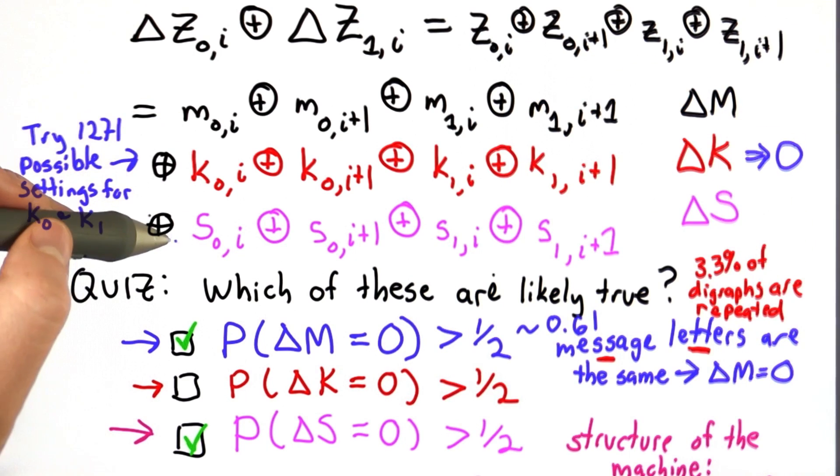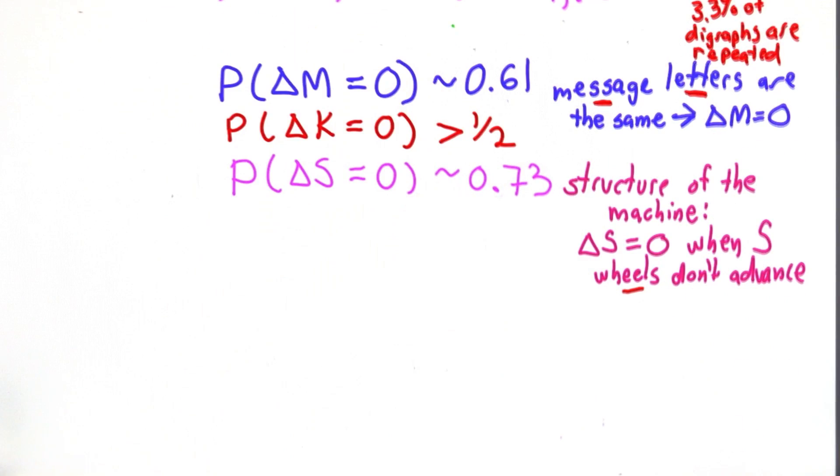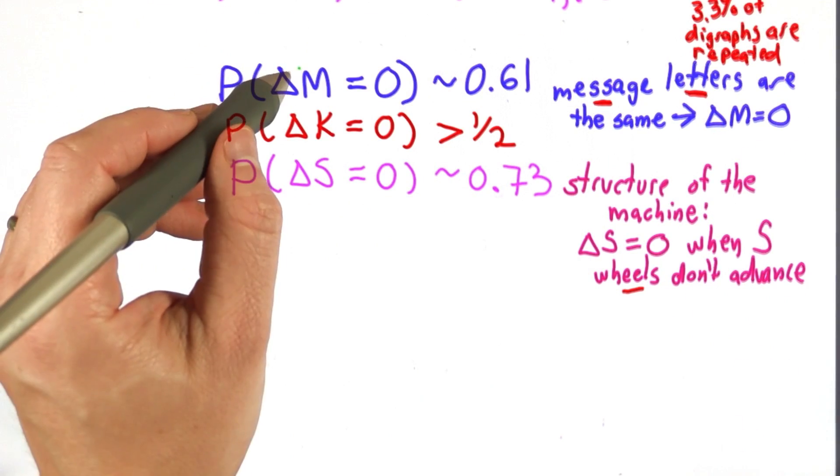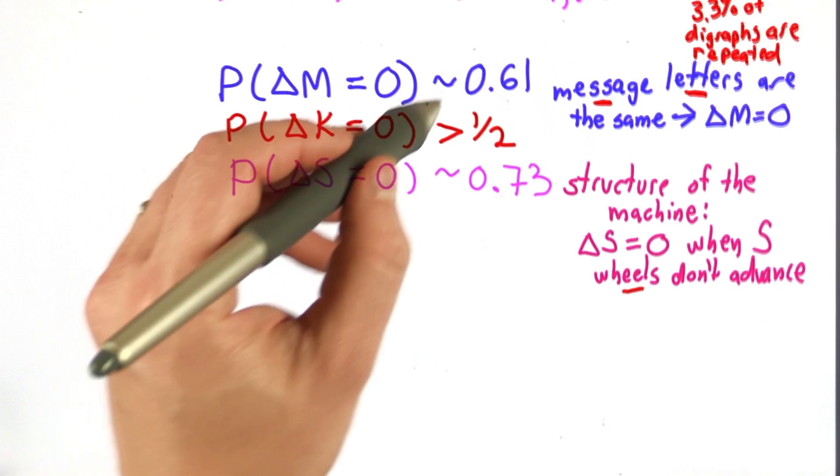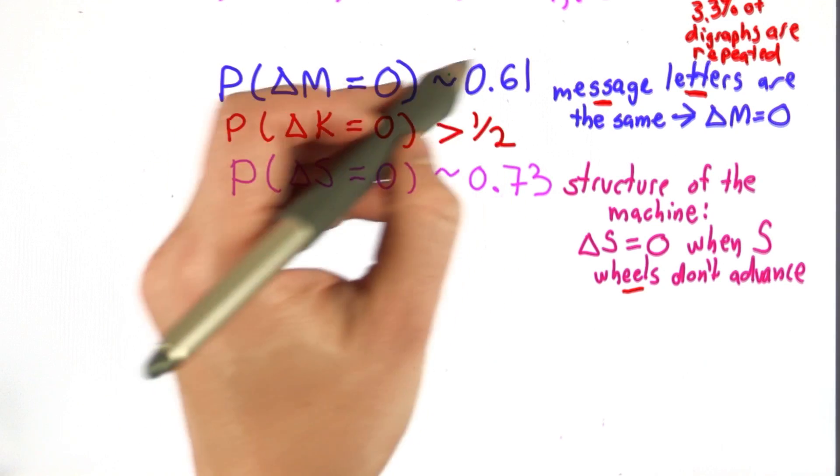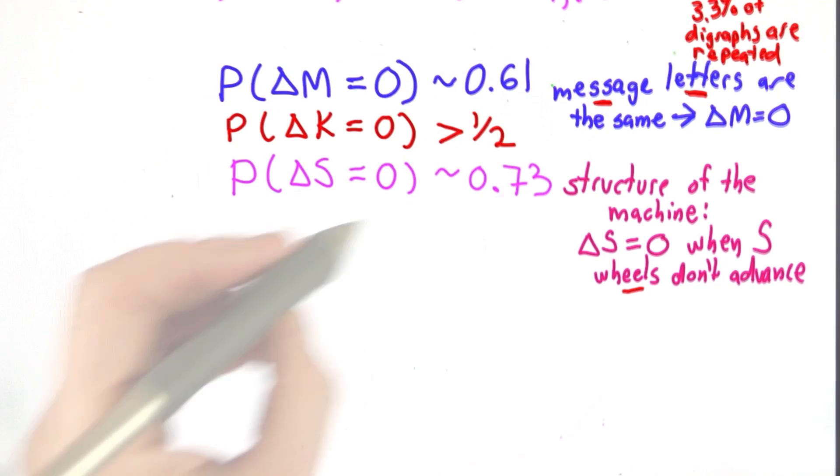So now all that's left is the other two parts. This is what we had before. We knew that the probability of delta M being 0 was greater than half, and it was actually about 0.61 for German because of the likelihood of message letters being repeated.